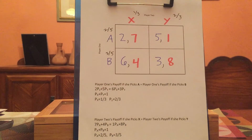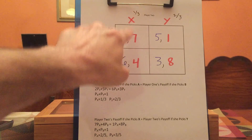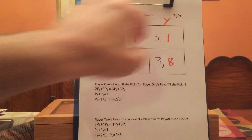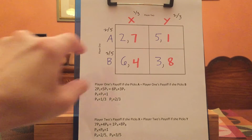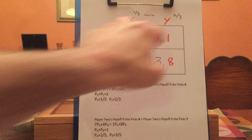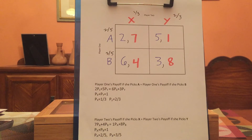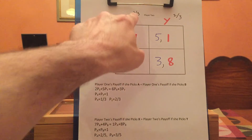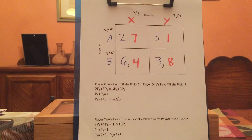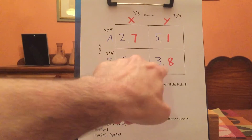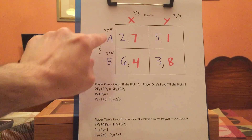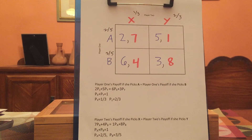Let's make sure this is right. Given these probabilities, let's make sure player one is willing to randomize. If you play A, you get two one third of the time and five two thirds of the time — the average payoff is two times one third plus five times two thirds, which equals 12 thirds. If you play B, you get six times one third plus three times two thirds — that's also 12 thirds. So given these probabilities, player one gets the same average payoff from A as from B, so she's willing to mix.